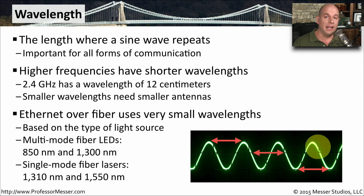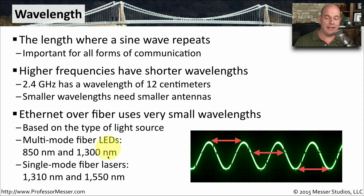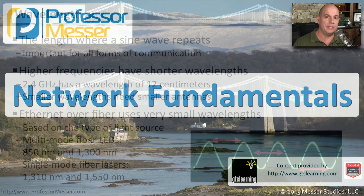When sending light over fiber, we're talking about extremely small wavelengths. Over multi-mode fiber using LEDs, you have 850 nanometers and 1,300 nanometers — a nanometer is 1 billionth of a meter, so that is a very small wavelength. Over single-mode fiber, you can go all the way up to 1,550 nanometers. The differences between a wireless network and one communicating over light are very significant when you look at the size of the wavelengths.